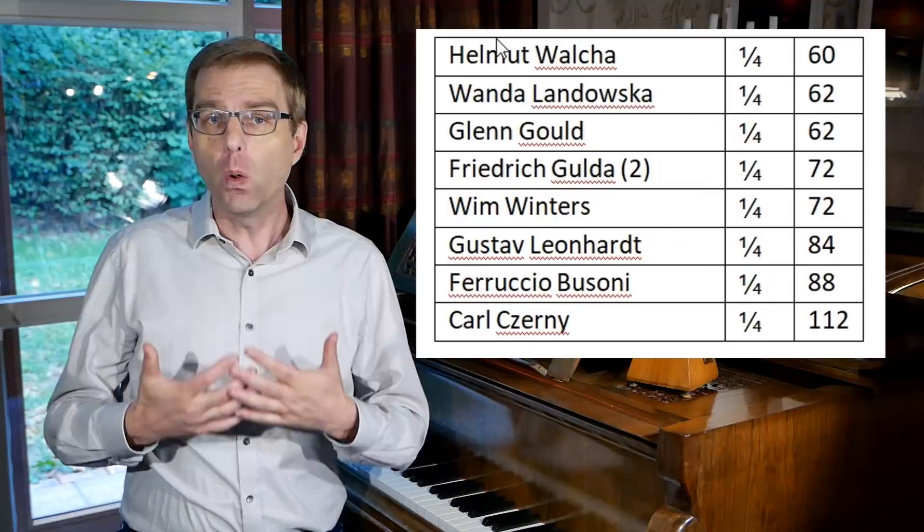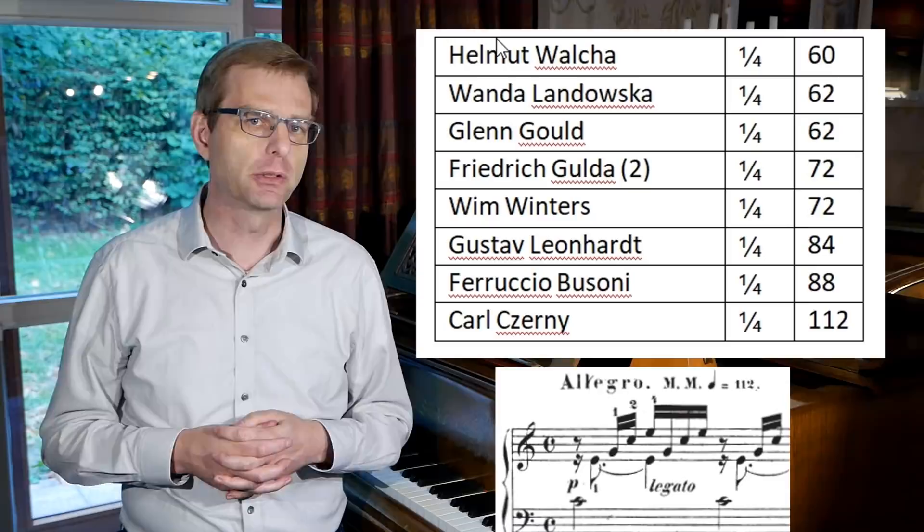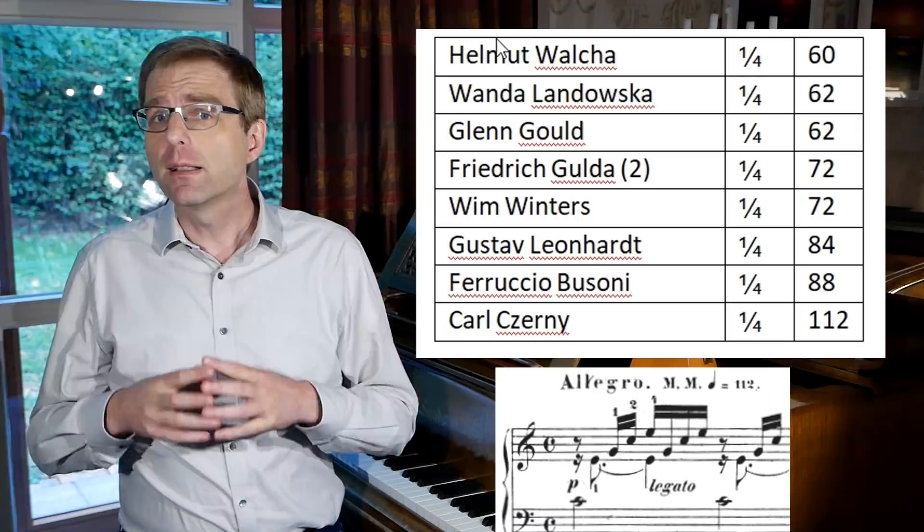We end with the tempo indication Czerny gives for this prelude, which is — if one excludes all context — the fastest of all: quarter note 112. He completely falls out of this row of tempi from 60 to 88 for the quarter note, almost doubling the speed of the normal tempo ordinario. Czerny is an important source, however, for understanding Chopin. A few months ago I made an episode on how Chopin played Bach — a video that is among the most viewed on my channel, I'll link it here on the screen — in which the Bach score of one of Chopin's pupils stood central.